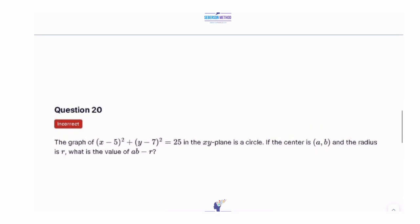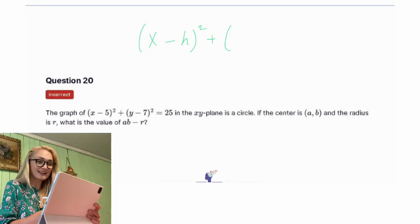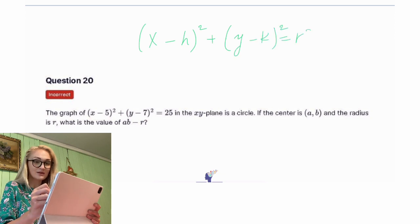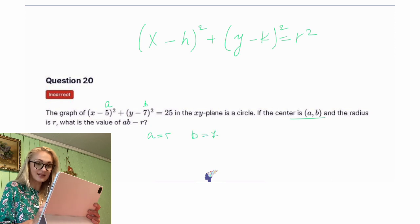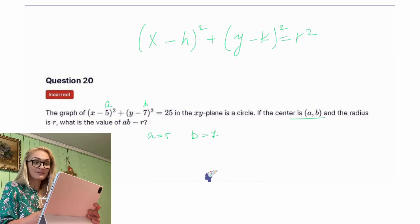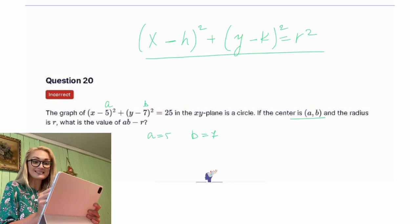Looks like a circle equation — I love circle equations. Let me remind you what a circle equation looks like: (x minus h) squared plus (y minus k) squared equals r squared. The center is going to be at (a, b). My value of a is going to be 5, my value of b is going to be 7. Don't think it's going to be negative 5 or negative 7 — it won't be, because inside the original formula for the circle, the minuses are inside the parentheses. So a is 5, b is 7, and r is 5 — not 25, because the formula ends in r squared.